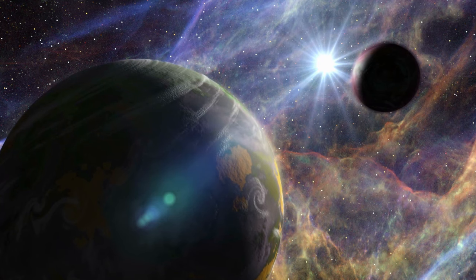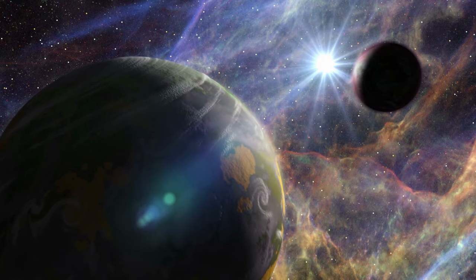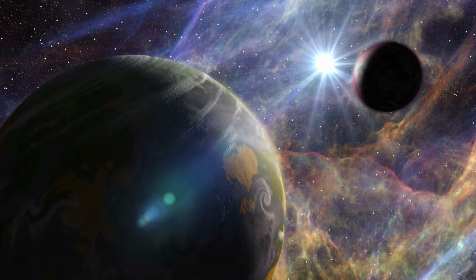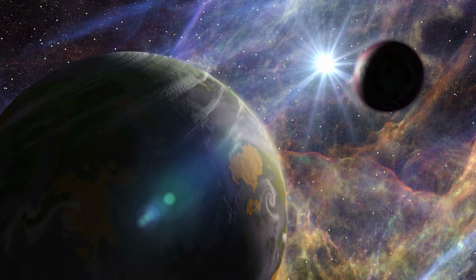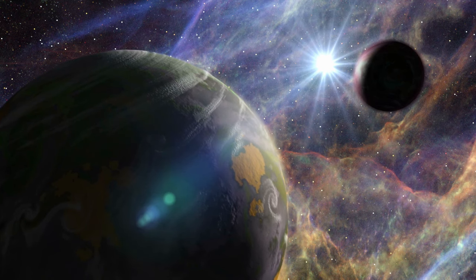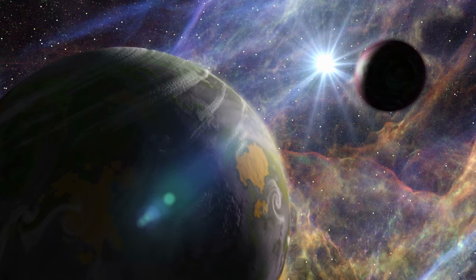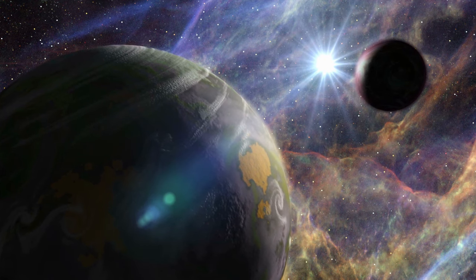Kuiper Belt, realm of icy bodies and dwarf planets. Beyond Neptune lies the Kuiper Belt, a region teeming with icy bodies and dwarf planets. This outer realm offers insights into the formation and evolution of our solar system.